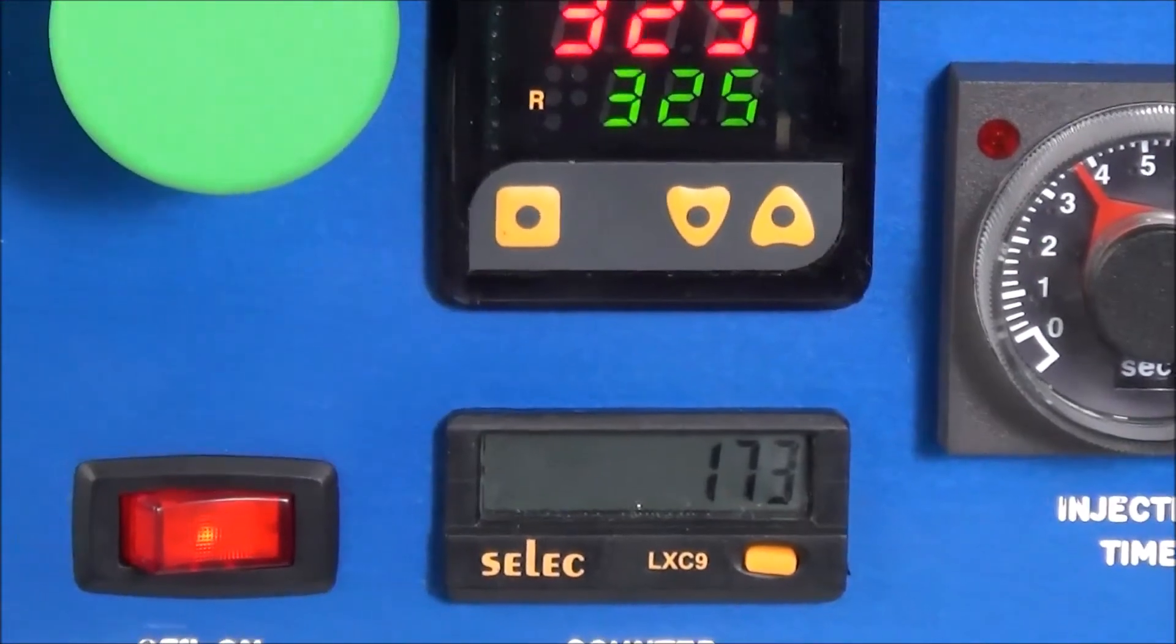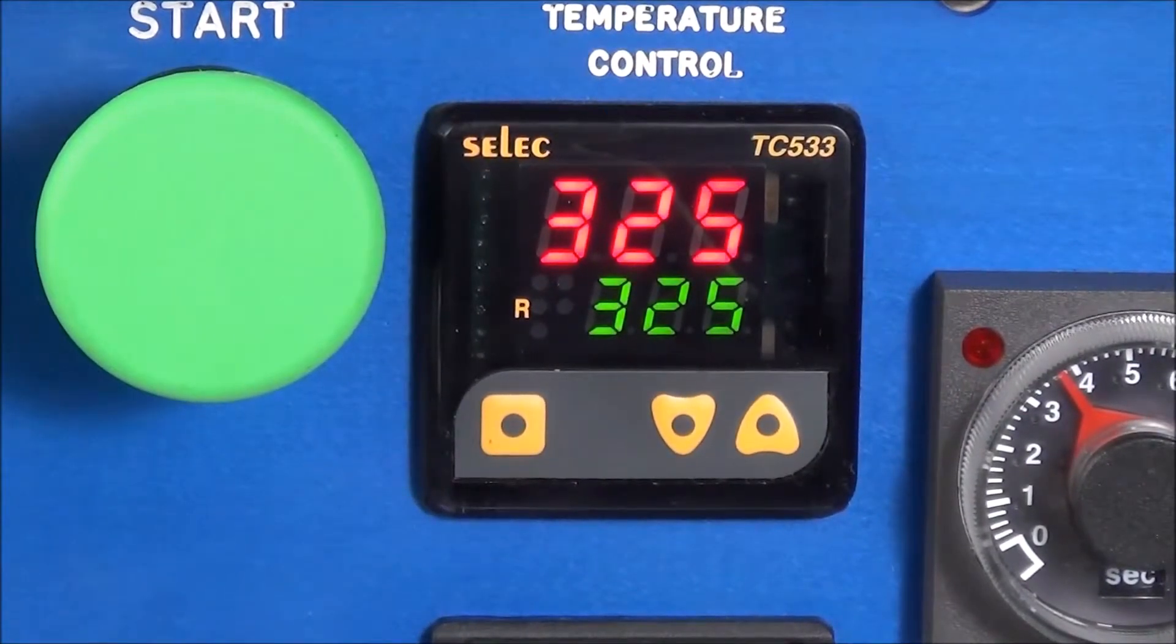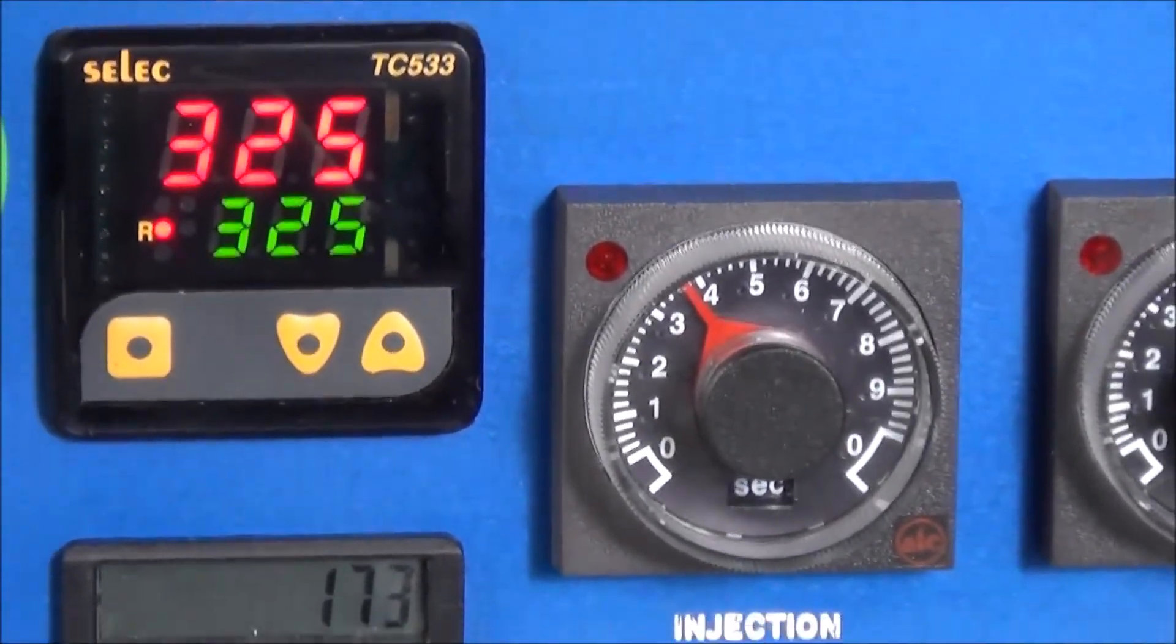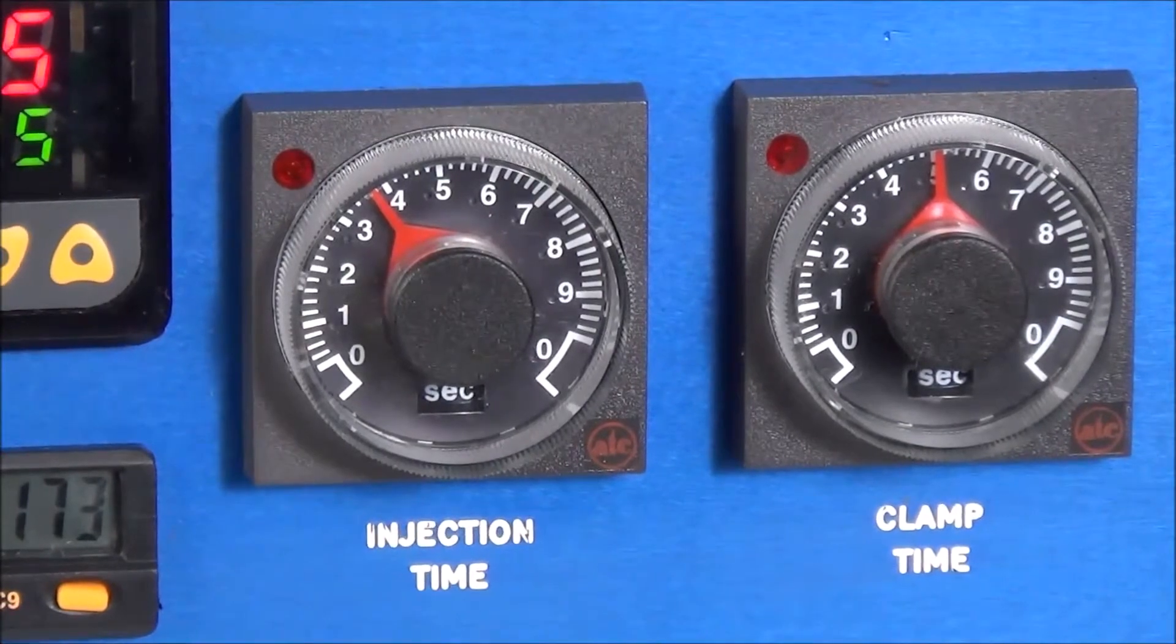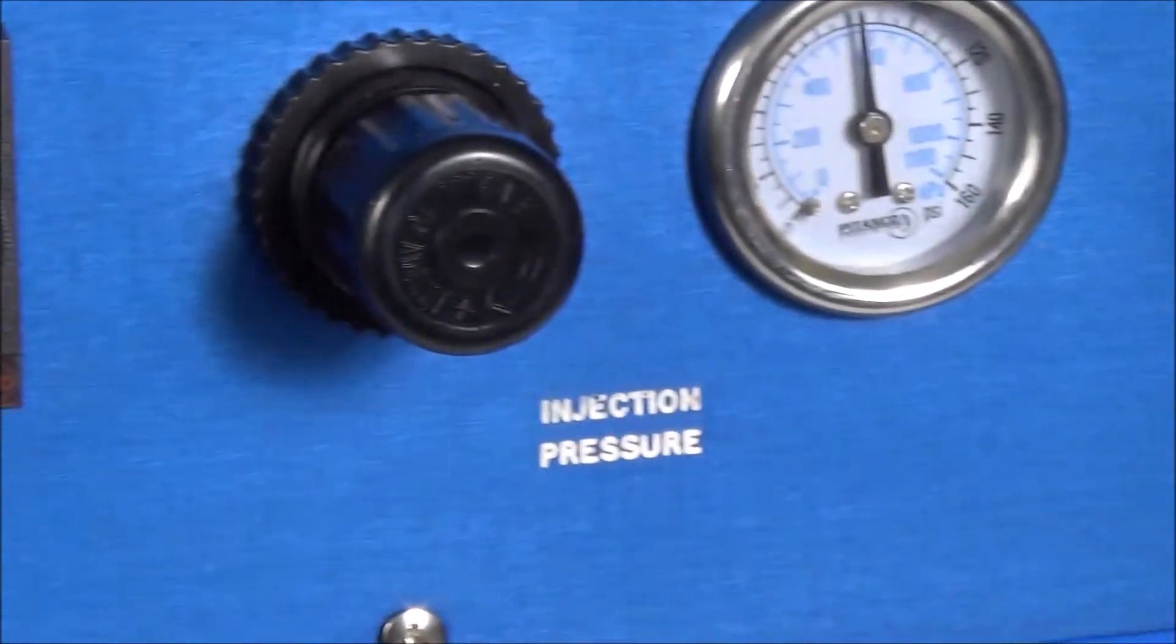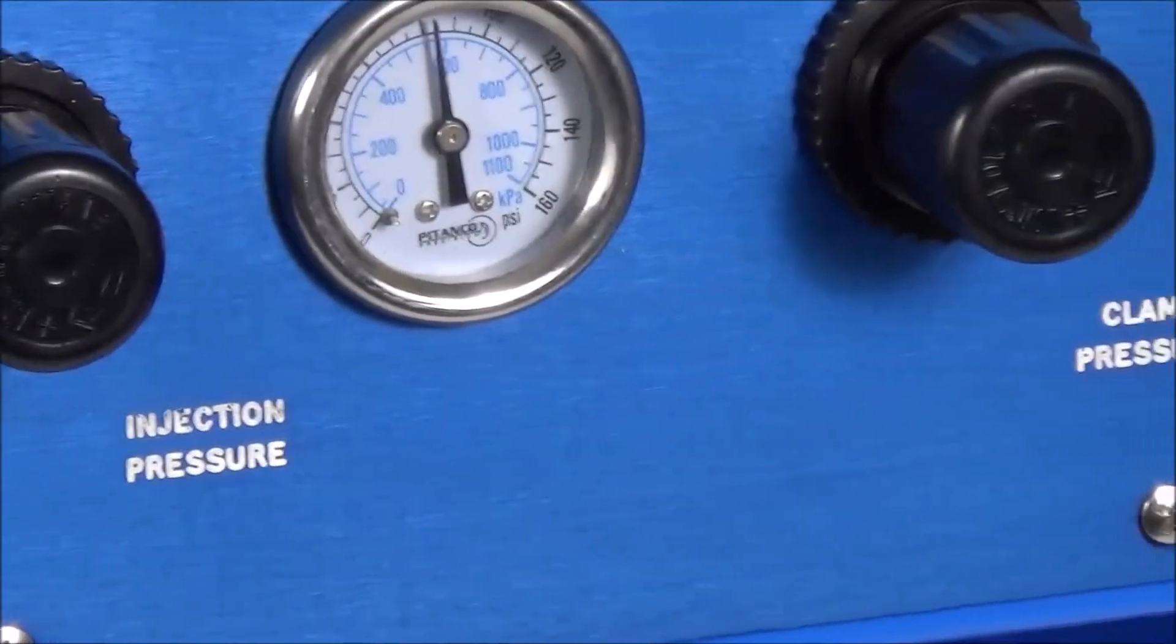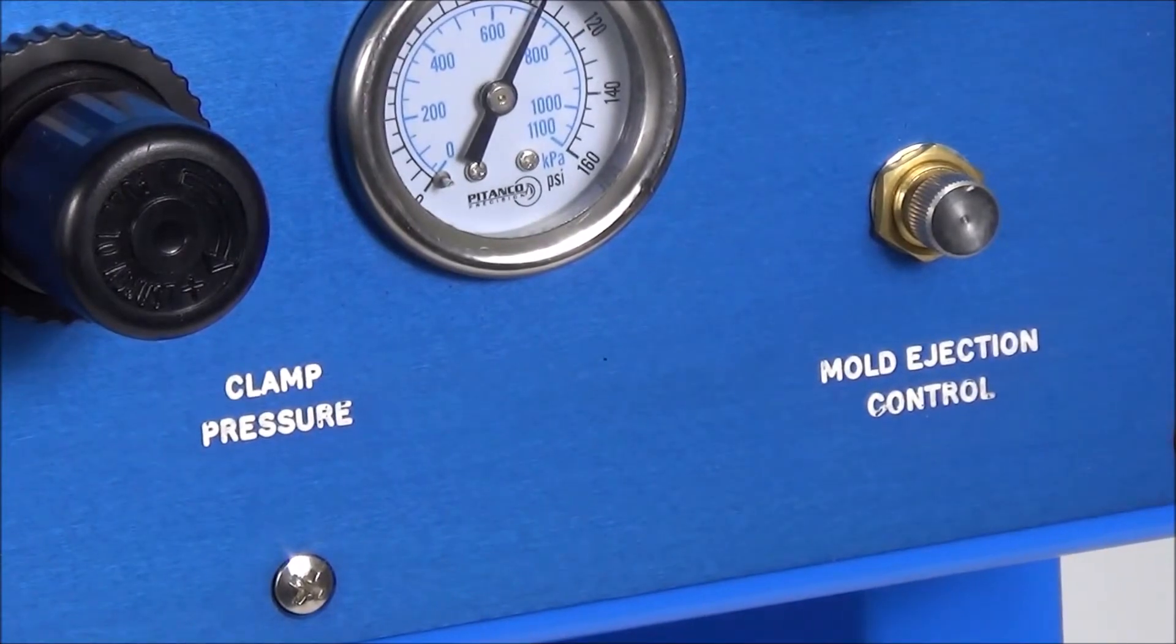The programmable temperature controller is located on the left side of the control panel. The injection time and clamp time controllers are located towards the left side of the control panel. The injection pressure and clamp pressure controls are located to the right of the control panel. And the smaller knob below the right activation button controls the mold ejection force.